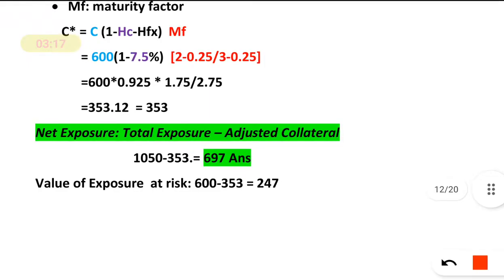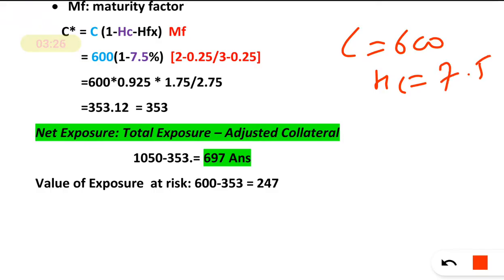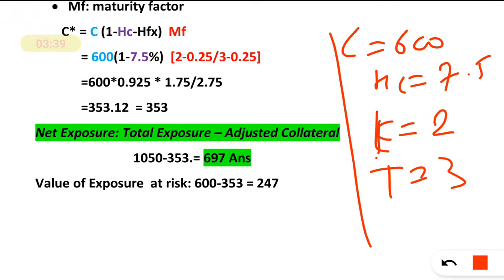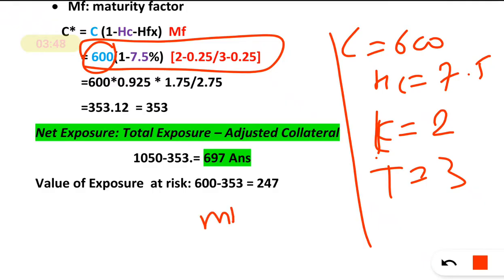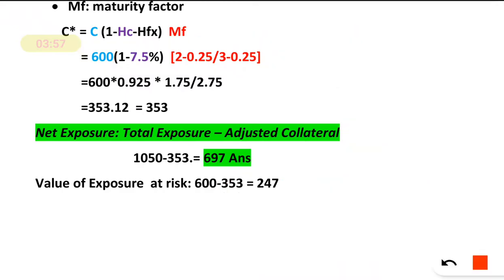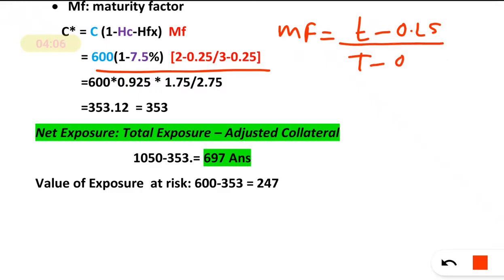Now we substitute the values. C = 600 crore, haircut hc = 7.5%, hfx = 0, and MF = (t − 0.25) / (T − 0.25) = (2 − 0.25) / (3 − 0.25). So: C* = 600 × (1 − 7.5% − 0) × (1.75 / 2.75).